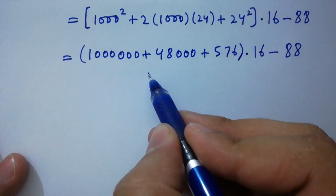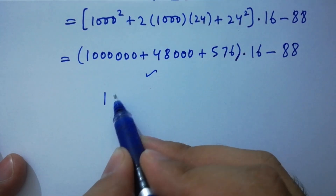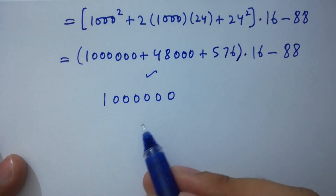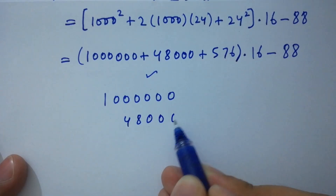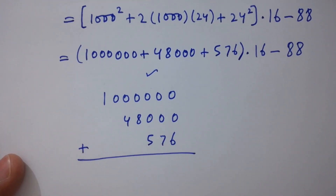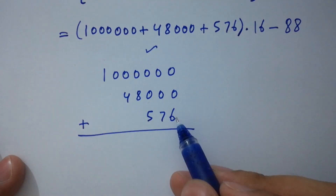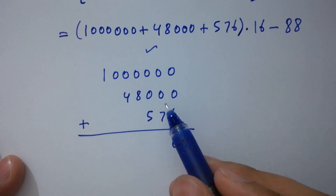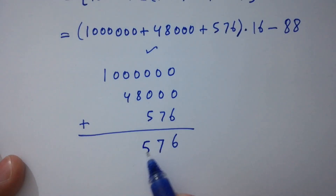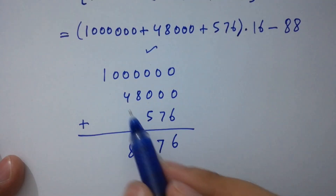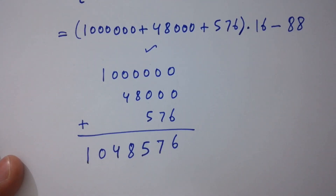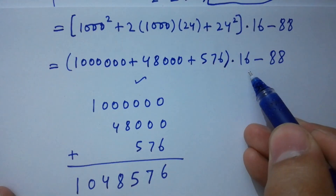First, add the components: 1,000,000 plus 48,000 plus 576. Adding these together: 0+0+6 = 6, 0+0+7 = 7, 0+0+5 = 5, 0+8 = 8, 0+4 = 4, 0, and 1. This gives us 1,048,576. Next, multiply this result by 16.